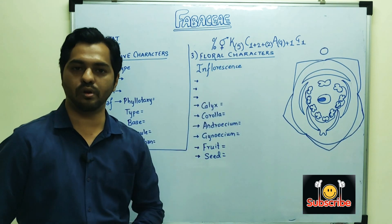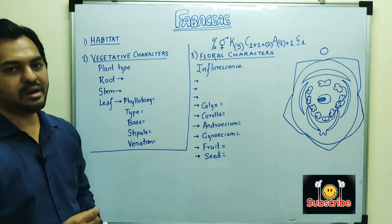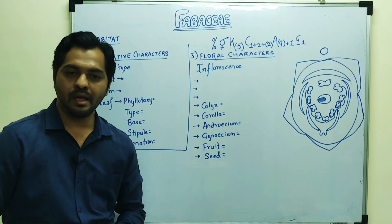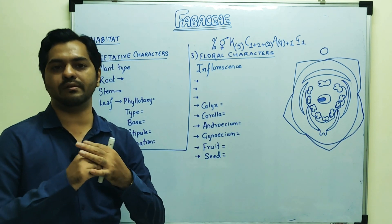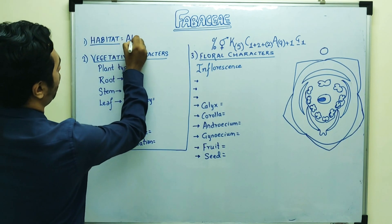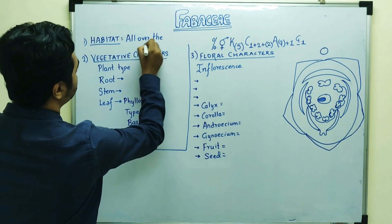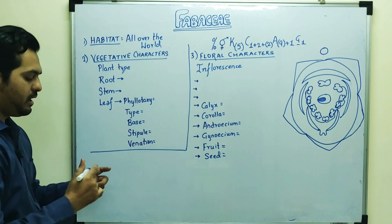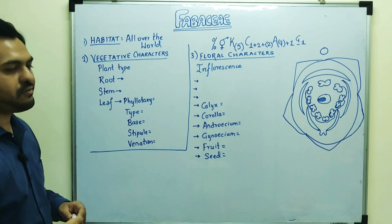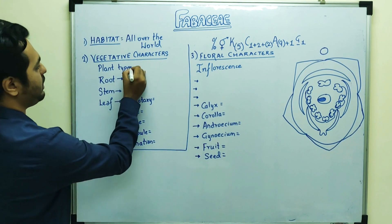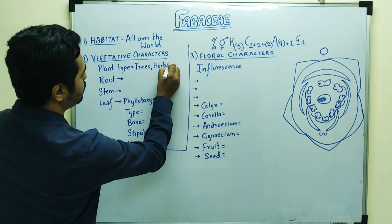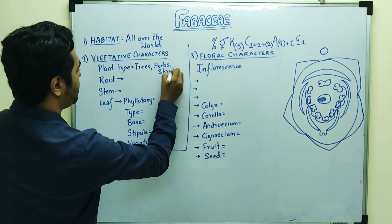Now some characteristic features regarding habitat: Leguminaceae family members like the pea plant, sweet pea, or Sesbania are distributed all over the world, so their habitat covers a very wide geographical area. These plants can be present as trees, herbs, or even shrubs — so herbs, shrubs, and trees are the different plant types observed.